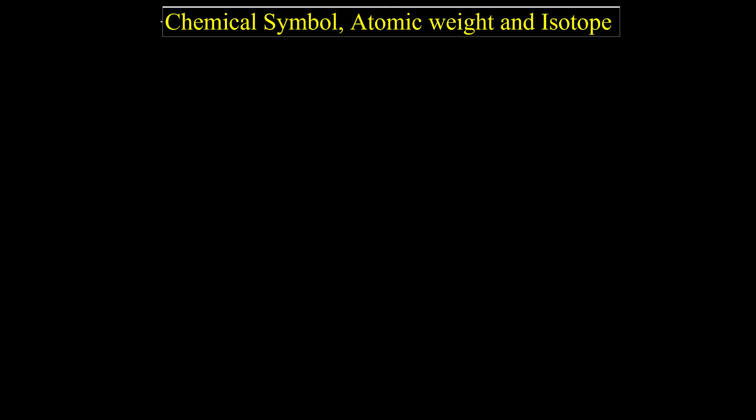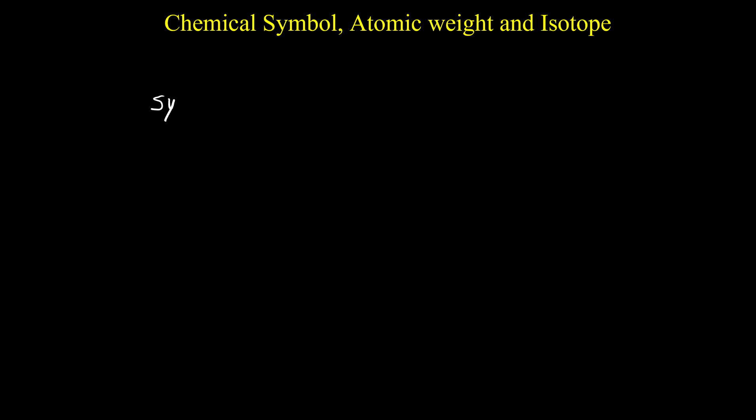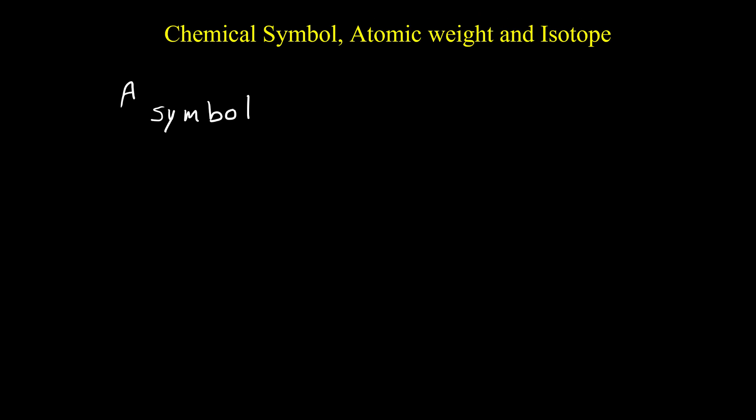In this video I'm going to talk about chemical symbols, atomic weight, and isotopes. In chemistry, for showing an element we use a symbol with two numbers — A and Z.